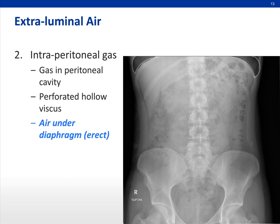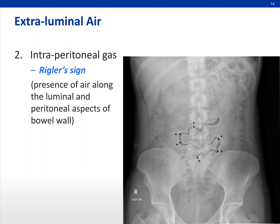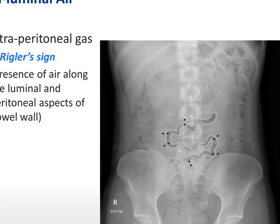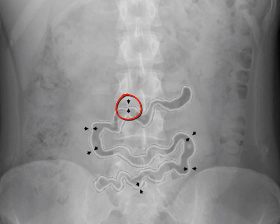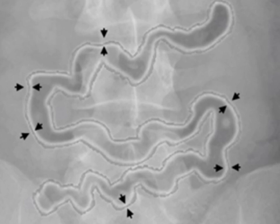Next, we have intraperitoneal gas — gas within the peritoneal cavity. It is an indicator of perforated hollow viscus, so it is a surgical emergency. The most common sign is air under the diaphragm, but this is only usually seen when the x-ray is taken in an erect position because the air rises. If taken in a supine position, you may or may not see it, and that's when you look for other signs. One such sign is Rigler's sign, where you have air on either side of the bowel wall accentuating the bowel outline, making the bowel wall visible — which is not normal.